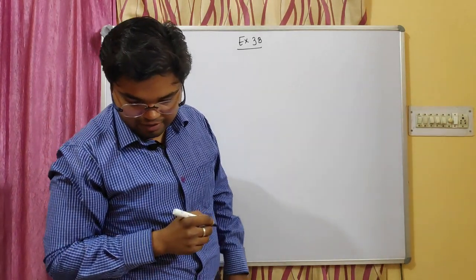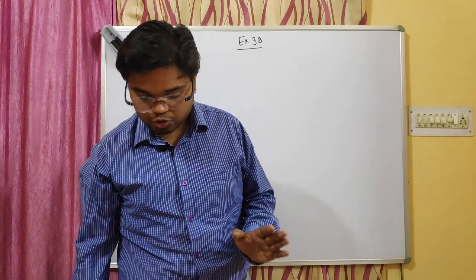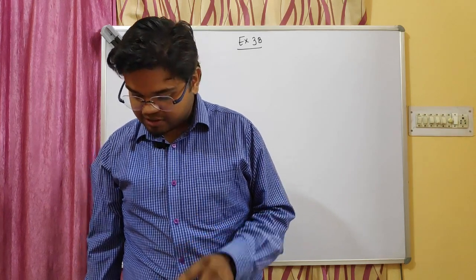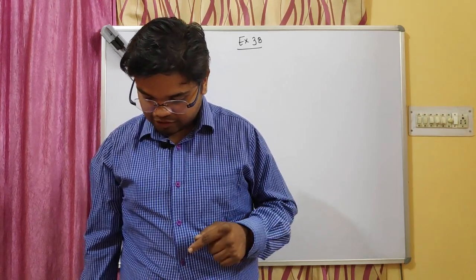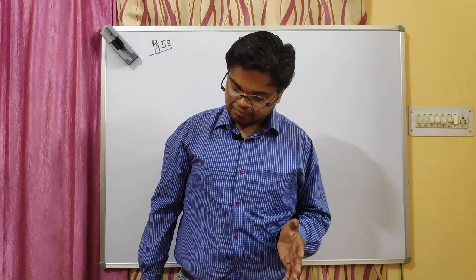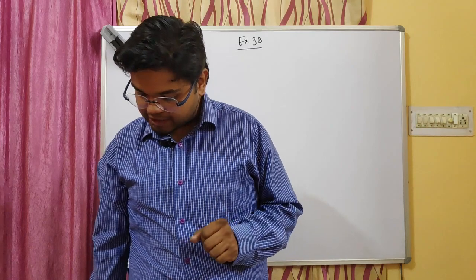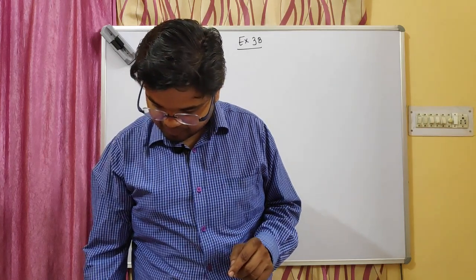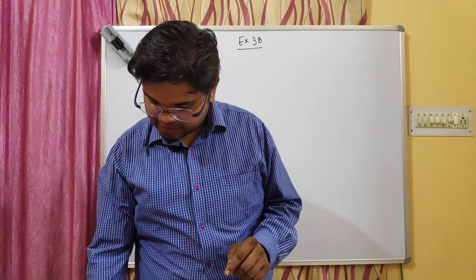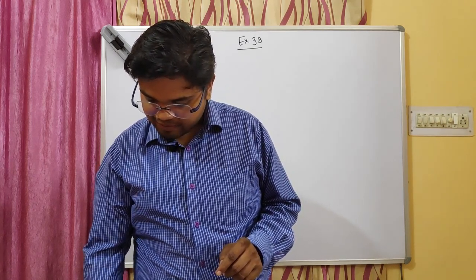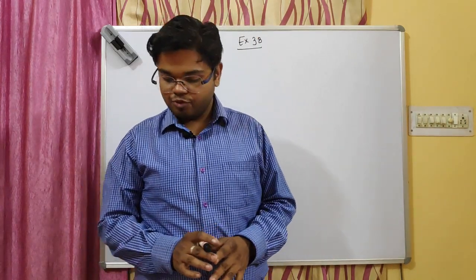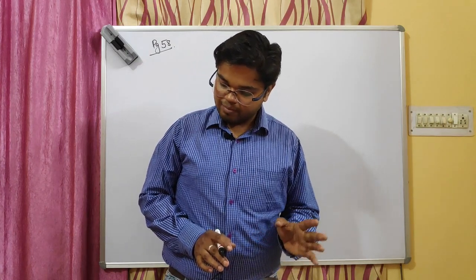In exercise 3B you have to write true or false. Question number one you will be doing in your textbook. Question number two will not come in your examination. Questions five, six, seven, and the MCQs you will also be doing in your textbook. The remaining question — number two — we won't be discussing as it is not for examination purposes. Questions to be done in your notebook are question numbers three and four.